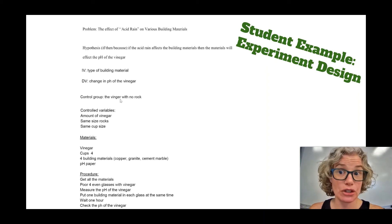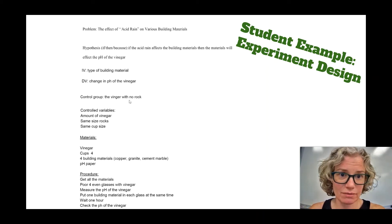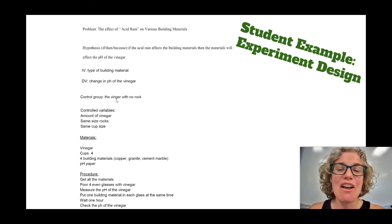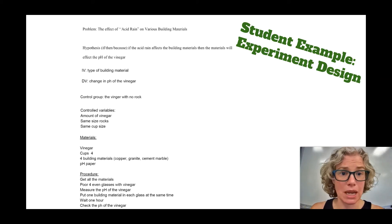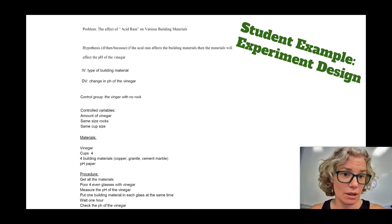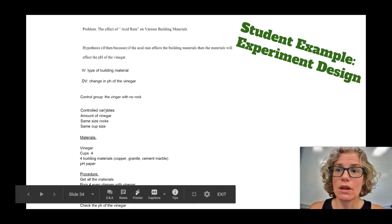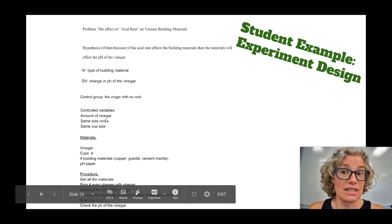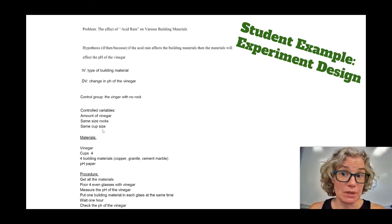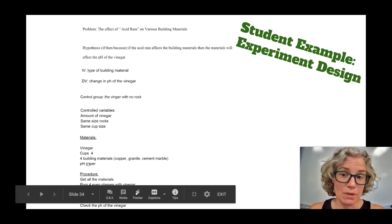For the control group, they compared it to vinegar without a rock in it, to make sure the pH of the vinegar doesn't change on its own over time as a comparison tool. Then they listed the things they're going to keep the same, followed by their materials list and procedure.